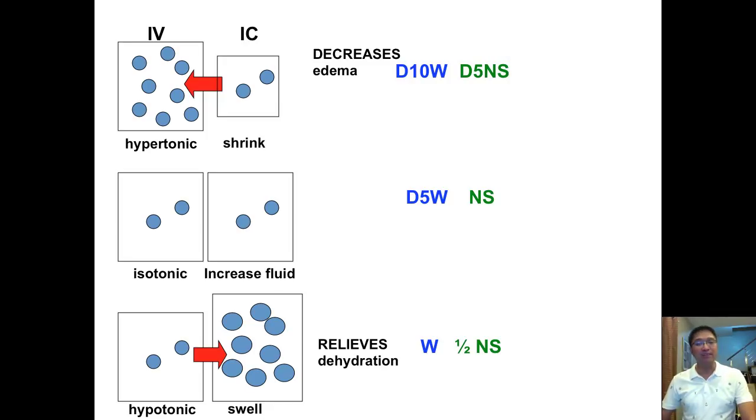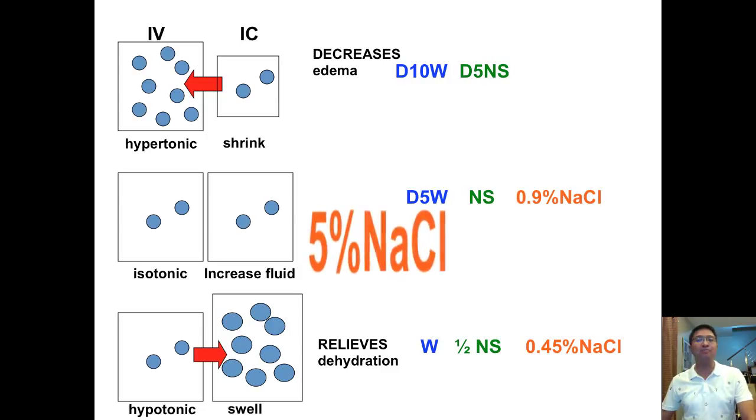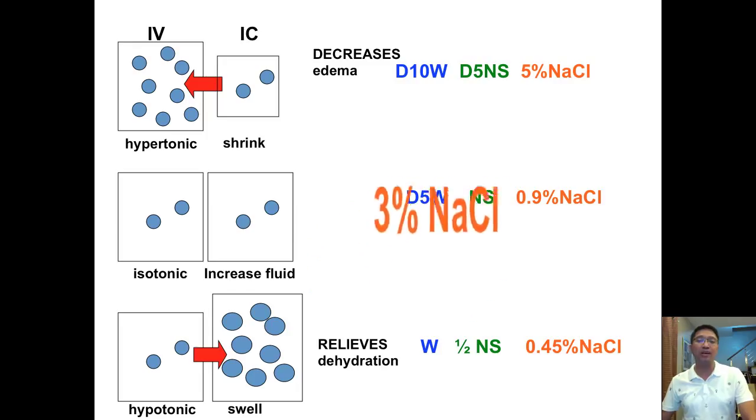What about 0.9% sodium chloride, which is another term for normal saline? 0.9%, that's isotonic. Anything lower than 0.9 is considered hypotonic: 0.45, 0.33. And anything higher than 0.9, like 5%, hypertonic. Anything higher than 0.9, like 3%, hypertonic.